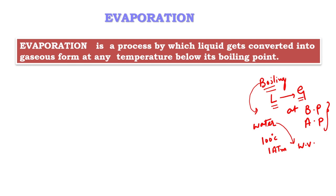What is the evaporation of water? At 5 degrees Celsius, at 7 degrees Celsius, at 9 degrees Celsius — below the boiling point — when liquid water converts into vapor, we call this the process of evaporation.